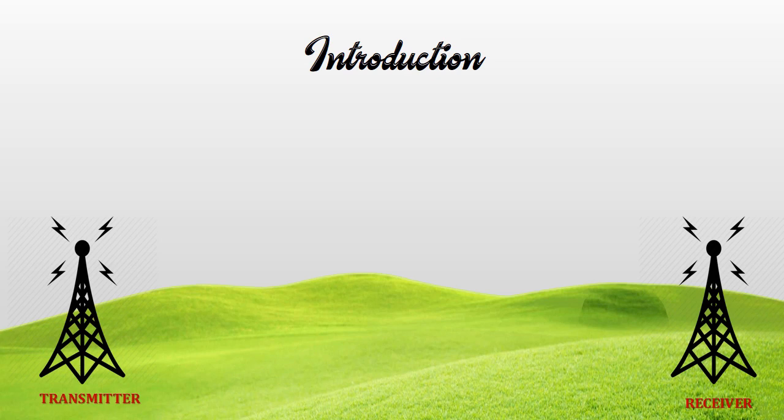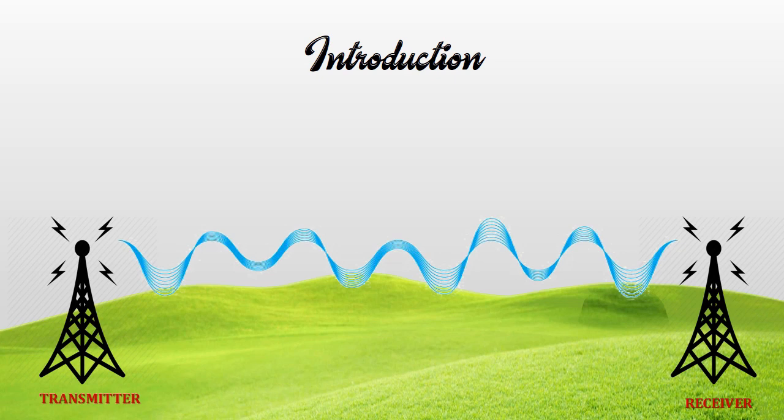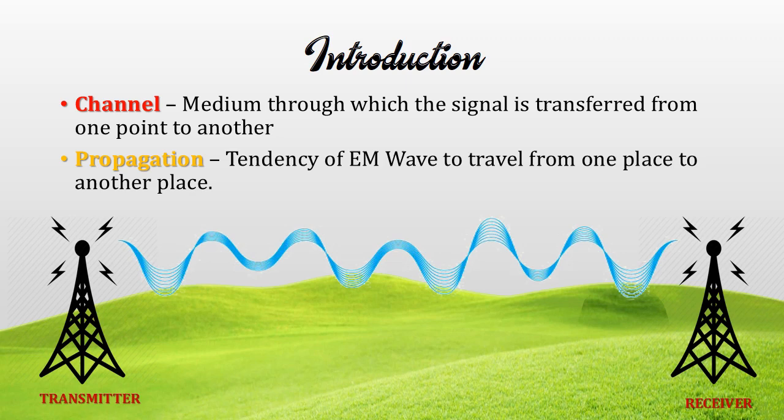To transmit messages wirelessly, the key components of wireless communications are a transmitter and a receiver. These two players exchange information in the form of electromagnetic waves. Two important terms to consider: first, the channel — a medium through which the signal is transferred from one point to another. Second, propagation — the tendency of an electromagnetic wave to travel from one place to another.